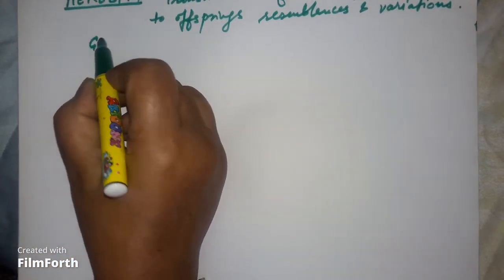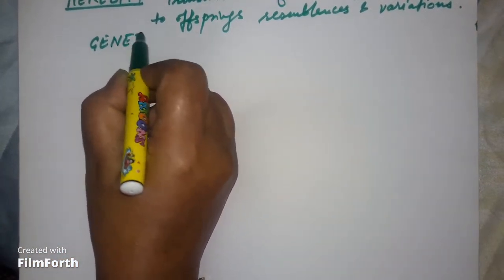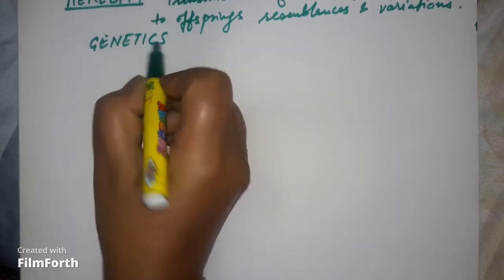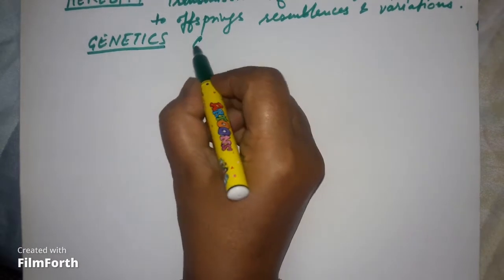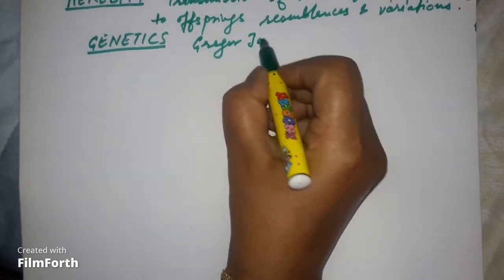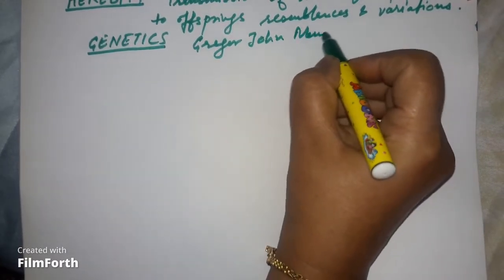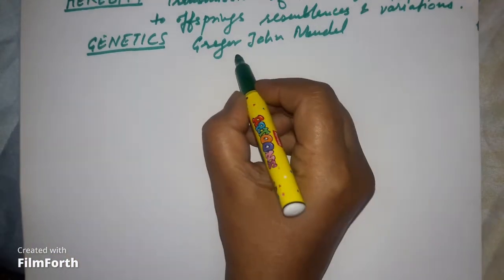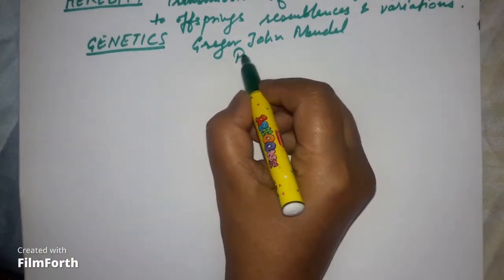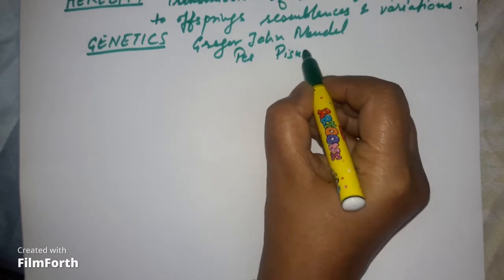The study of heredity is called genetics. Genetics was pioneered by Gregor Johann Mendel, who was based in Austria and was a monk. He worked in the garden of his church.